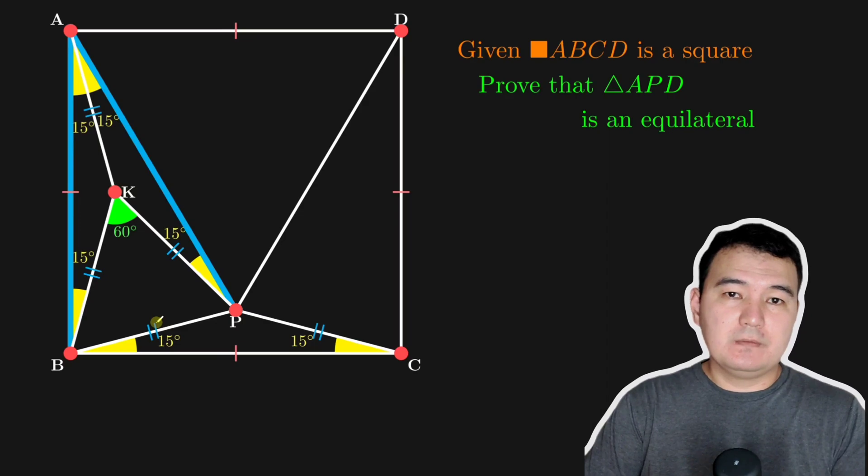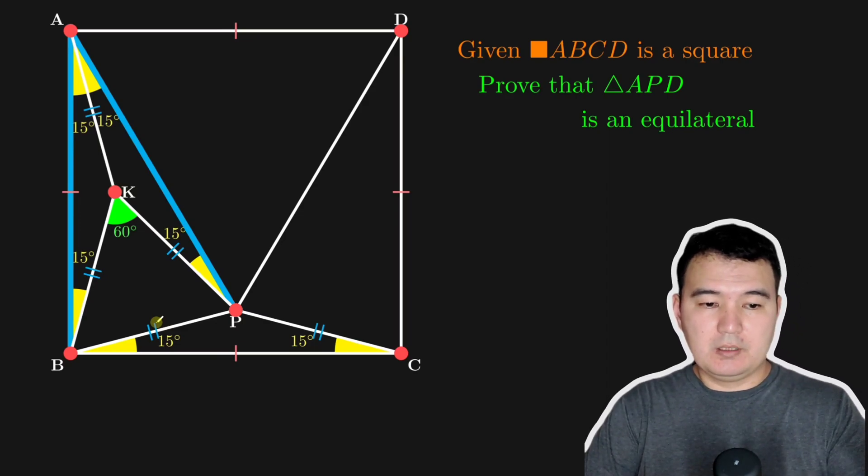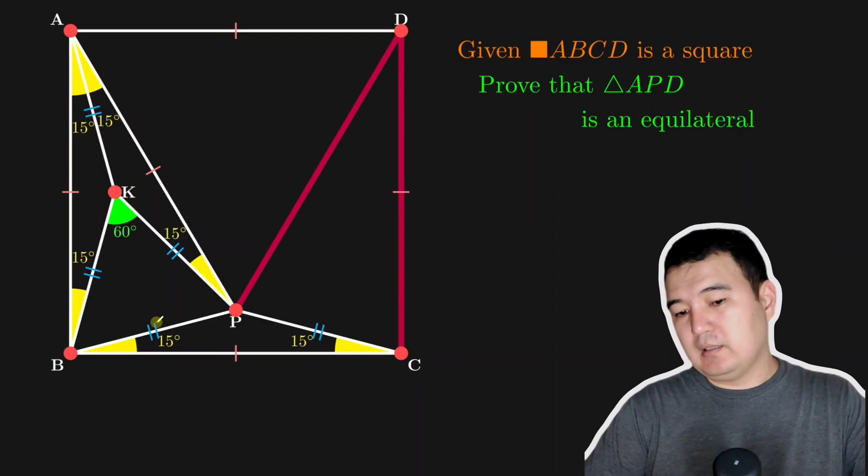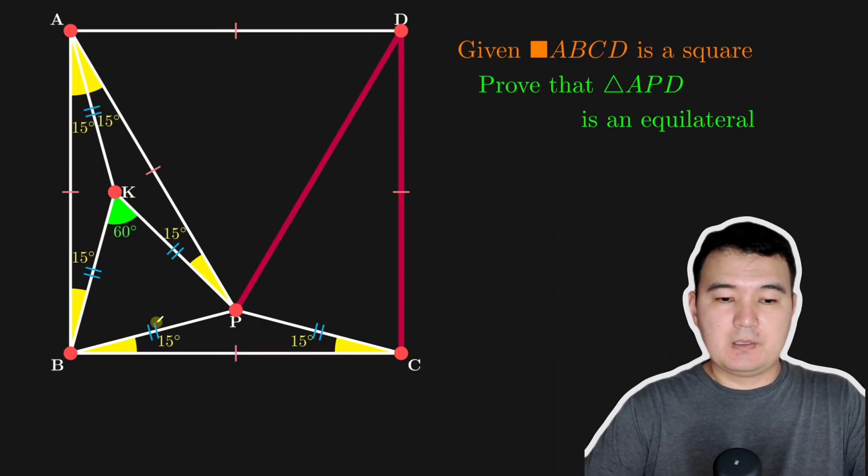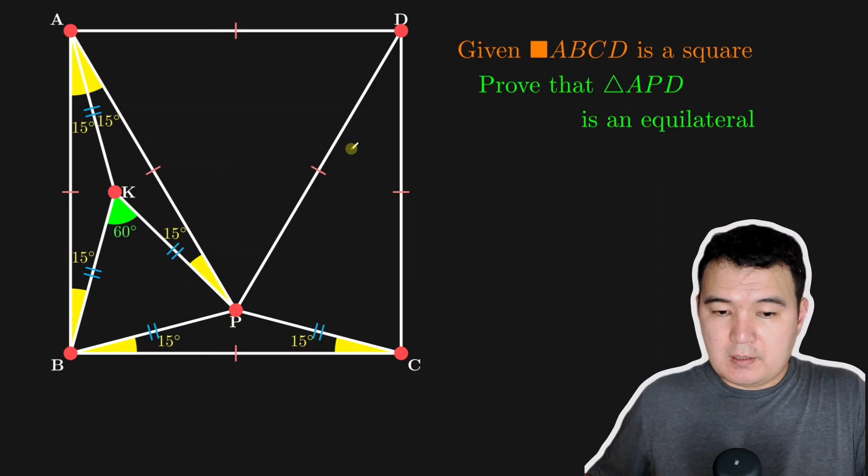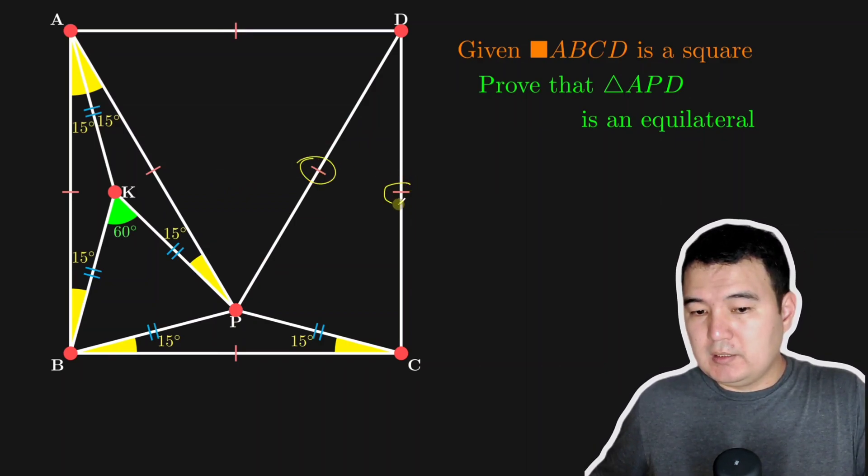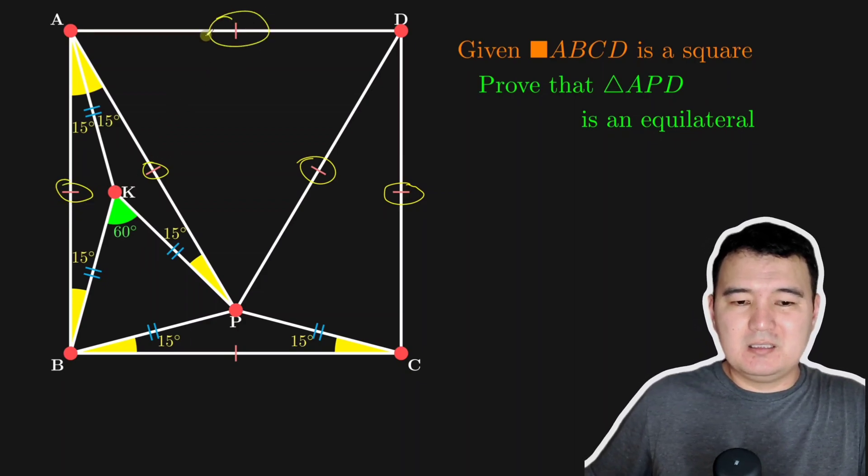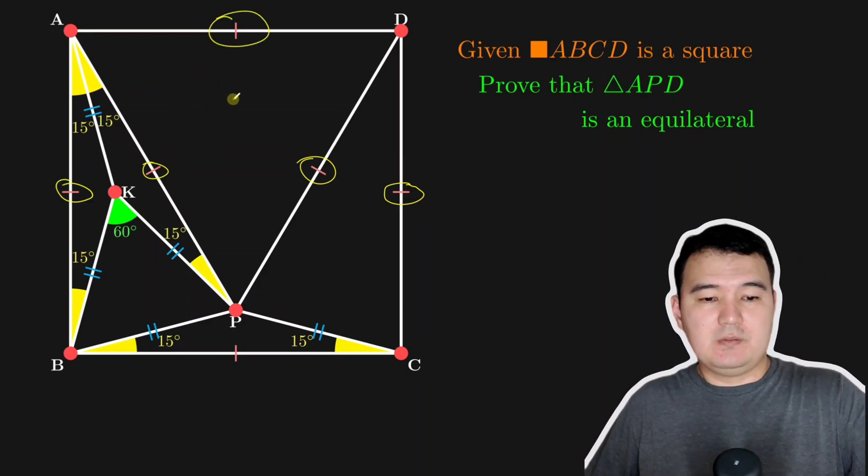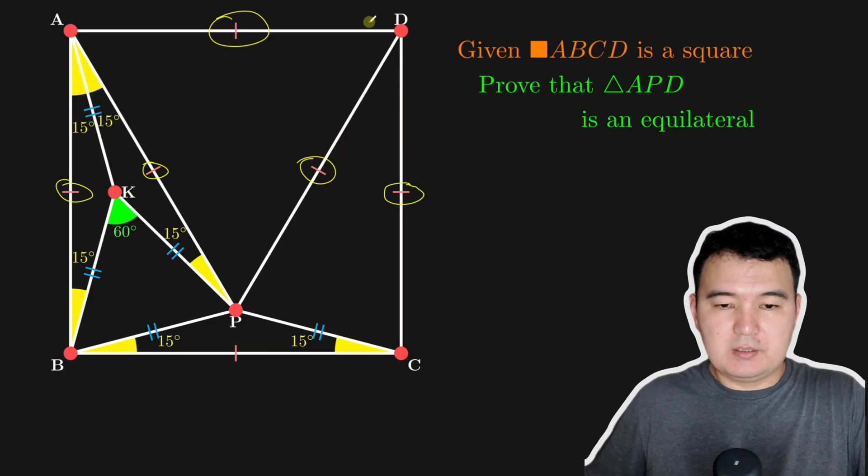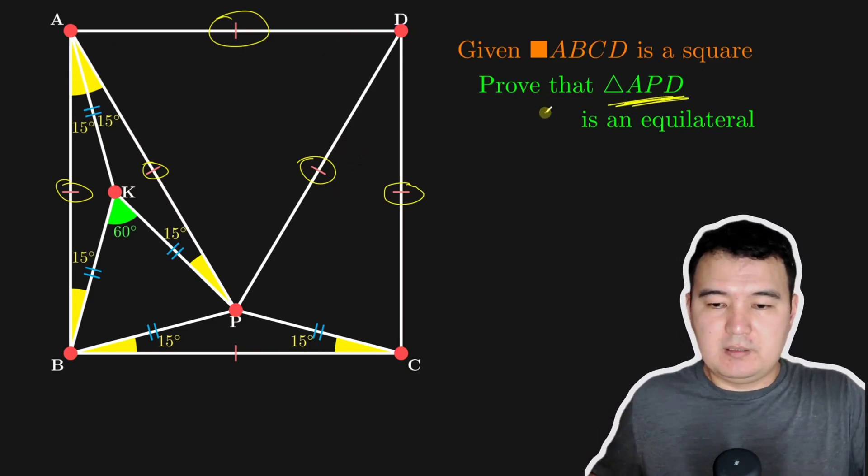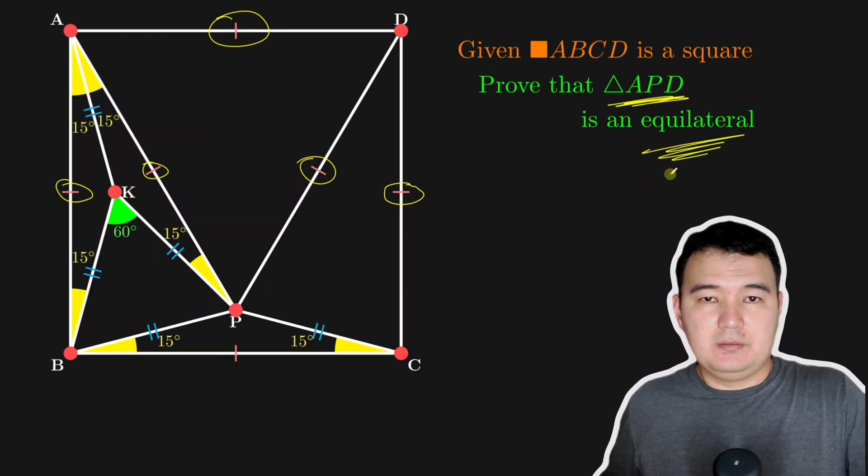So you can do the same kind of approach, same kind of argumentation to prove that these two sides are congruent as well. So that gives us this side is equal to side of a square and this is also side of square and this was initially one side of the square. So these all three sides of the triangle ADP are equal to each other. That makes it an equilateral triangle.